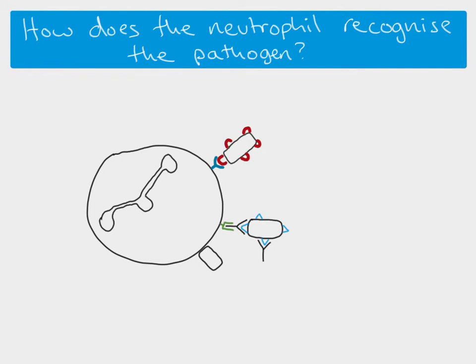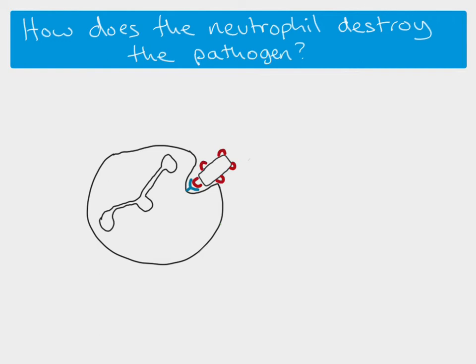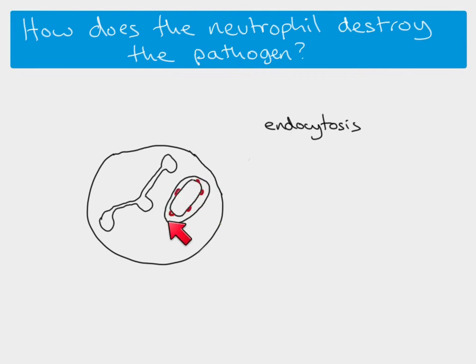Once the pathogen has been recognized, it can then be engulfed. The cell surface membrane invaginates — this process is endocytosis, and we call it phagocytosis, but it is an example of endocytosis. The cell surface membrane invaginates and fuses around the pathogen, forming a large vesicle or vacuole with the pathogen inside it. We call this a phagosome, or phagocytic vacuole.